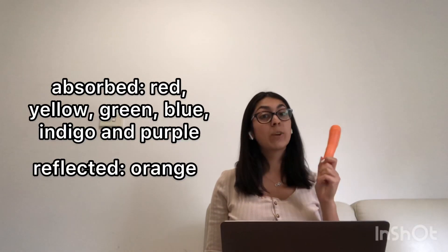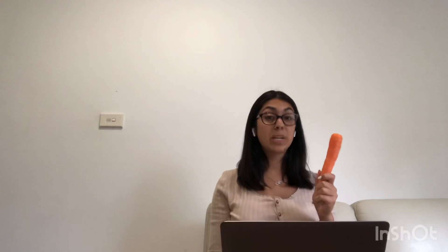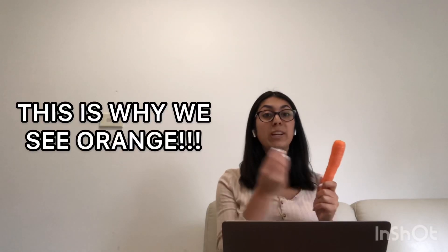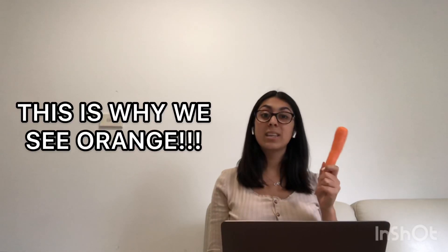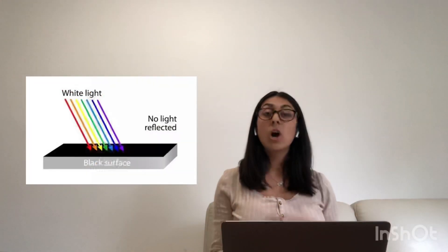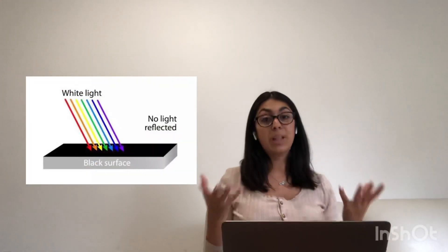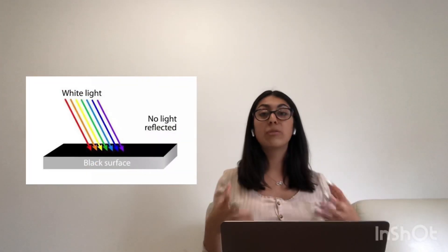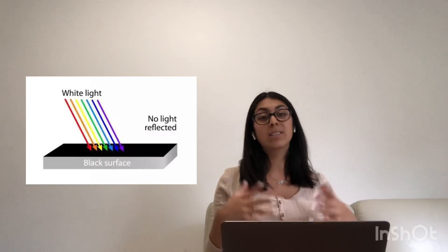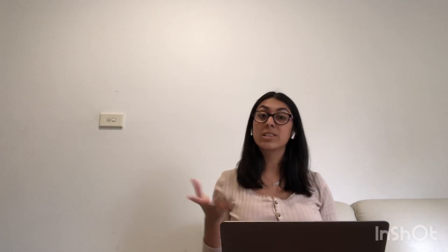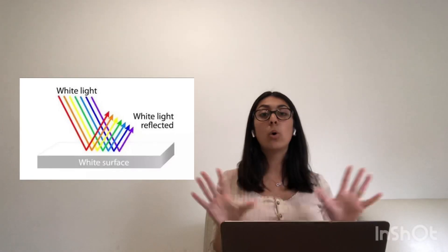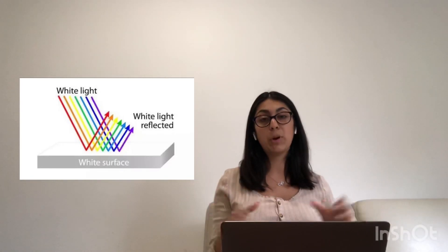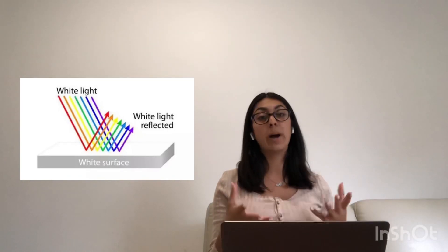For example, when light hits this carrot, all of the colours except for orange are absorbed, and because orange is reflected back into our eyes, we see this carrot as orange. Objects that are black absorb all of the wavelengths, so no colours are reflected. In comparison, white objects reflect all of the colour components, and this is what gives it its white colour.